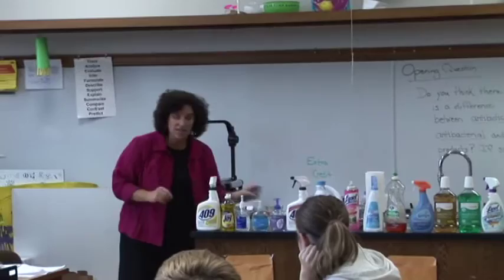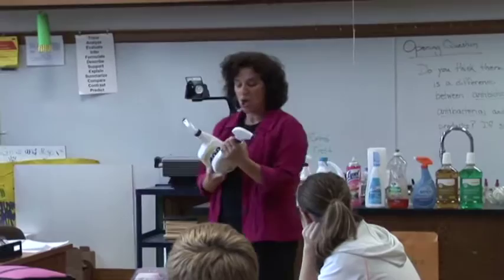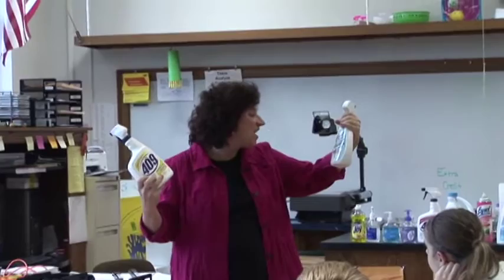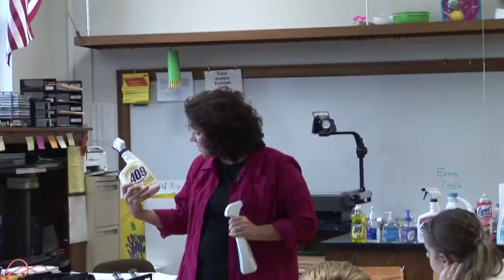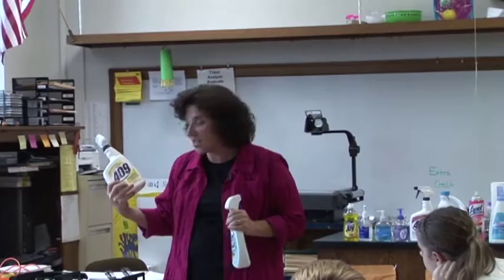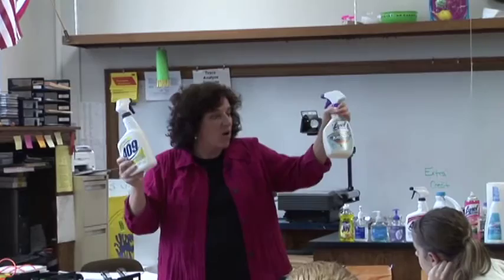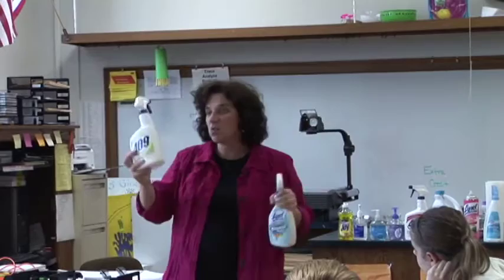Besides the amoxicillin, I have two kitchen cleaners. Both of them say antibacterial on them. They say 'kills household germs' — it doesn't say how many household germs, maybe it just kills two. This one is an antibacterial kitchen cleaner, an all-purpose cleaner, and it doesn't even say it kills germs. I chose these two products because this one does not have citrus in it, and this one does have citrus in it.